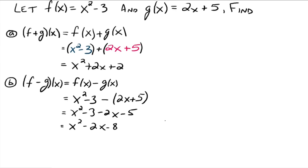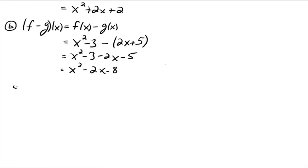Alright, so far so good? Okay, so let's go down to c. Okay, fg of x. Alright, so this means multiplication. So again, I encourage you to write out what it's defined to be. Okay, so f of x times g of x equals, alright, so f of x was x squared minus 3. And g of x was 2x plus 5.